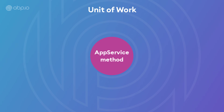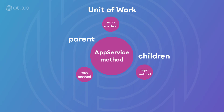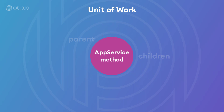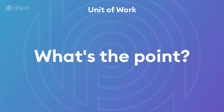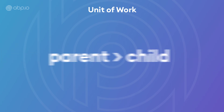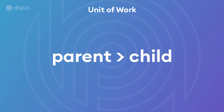Let's suppose you've called an application service method, and this method uses some repositories. The repositories do not begin a new unit of work — they instead participate in the current unit of work started by the ABP framework for the application service method. The point is: if you want to change the behavior of a unit of work, always start from the parent and then go deeper.